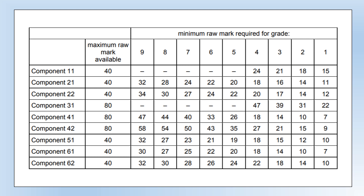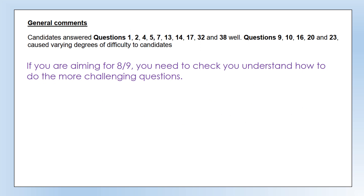Let's look at the grade thresholds for this paper and the examiner's report. This is component 2.1 — the multiple choice paper. You can see the scores needed for each grade. To get a grade 9 is fairly challenging, representing roughly the high 70 percent range. The examiner's report tells you which questions students found easy or hard. If you're aiming for an 8 or 9 (equivalent to the old A*), go back and make sure you can do all the more challenging ones.